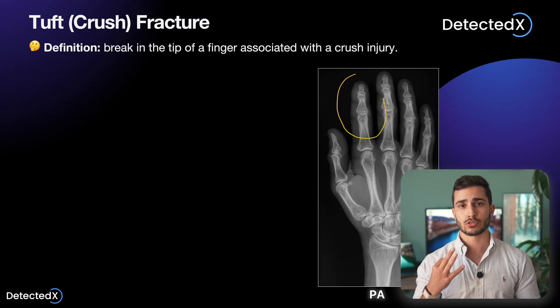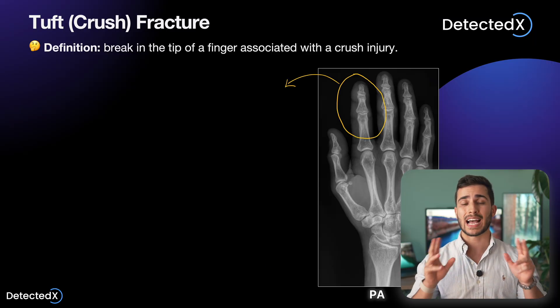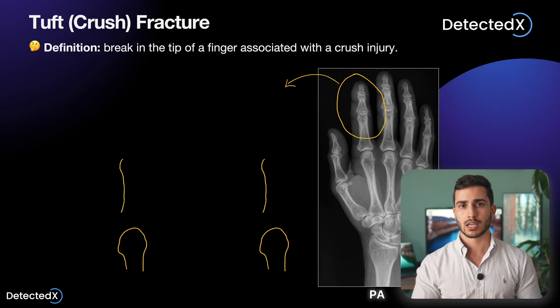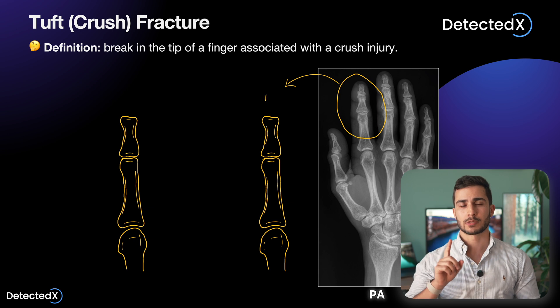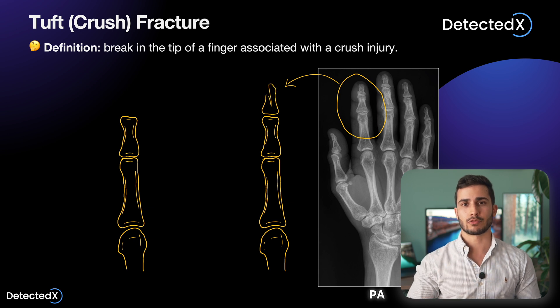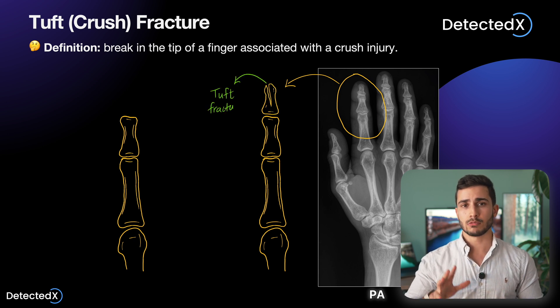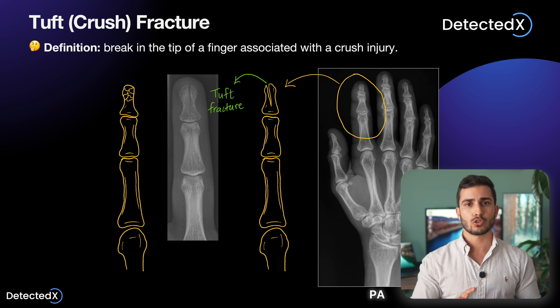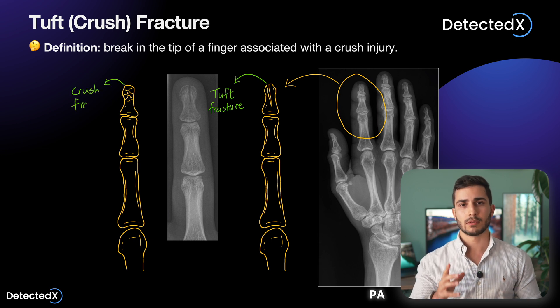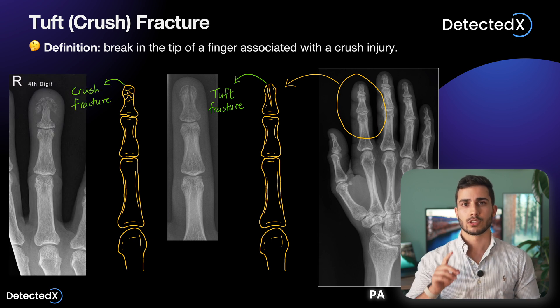Then, when you know what a normal x-ray looks like, in the third module I'll show you what abnormal looks like by taking you through the common pathologies you would expect to see in that region. I first discuss the abnormal pathology conceptually, and then you'll see me draw and identify them on an x-ray so you see it visually for yourself.